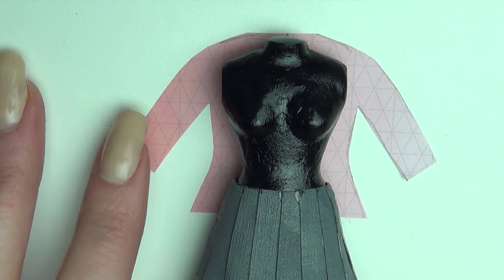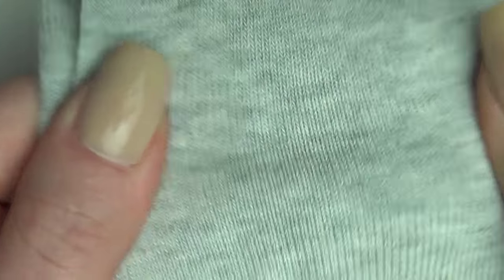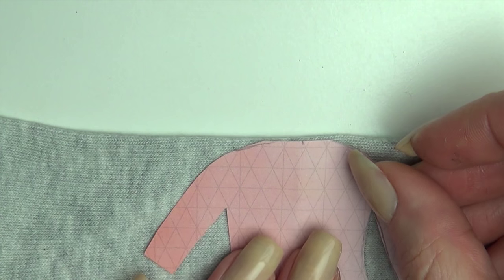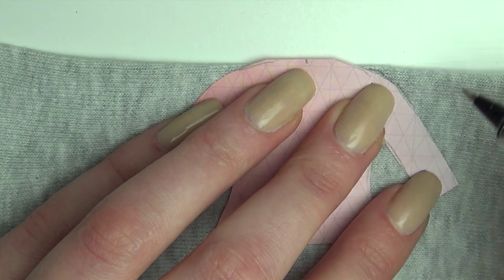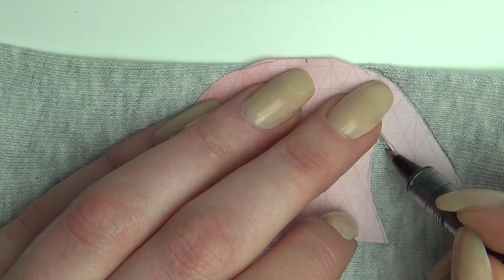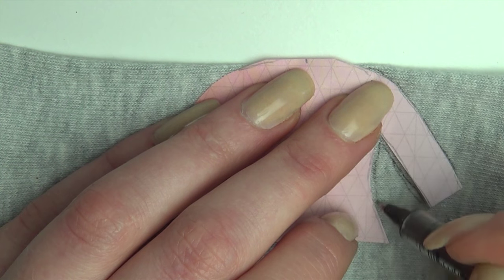For the sweater, make a basic stencil again. I couldn't get a piece of the right fabric at the fabric store, so a friend told me to use a sock which actually worked. Cut out and glue together just like we did the cape.